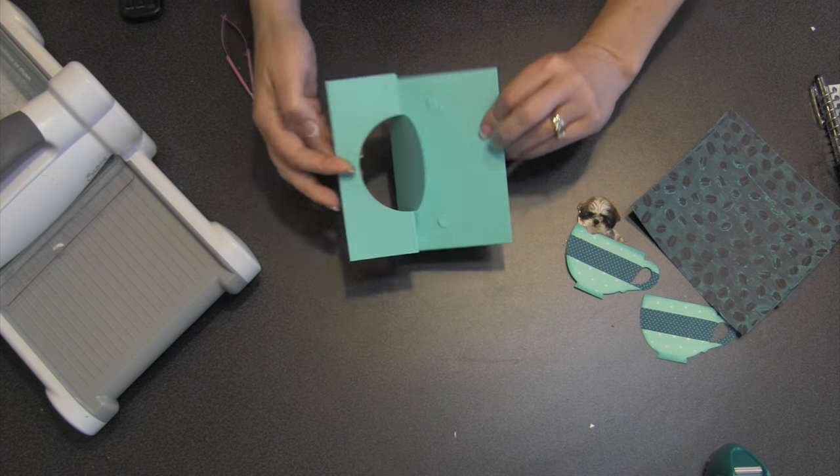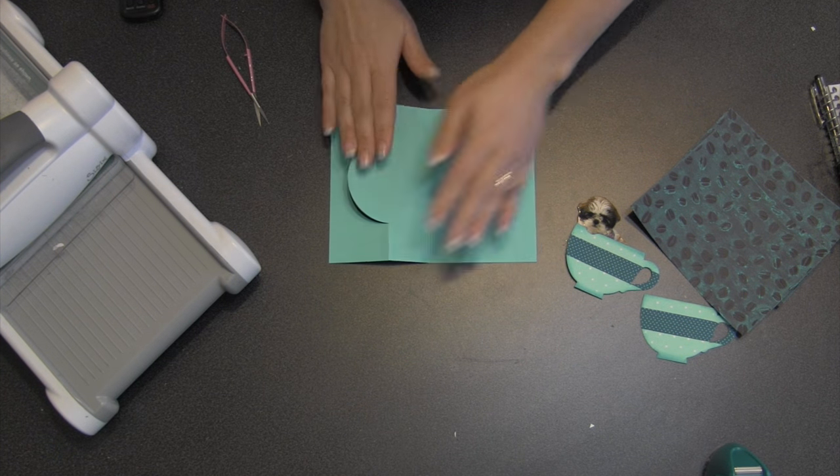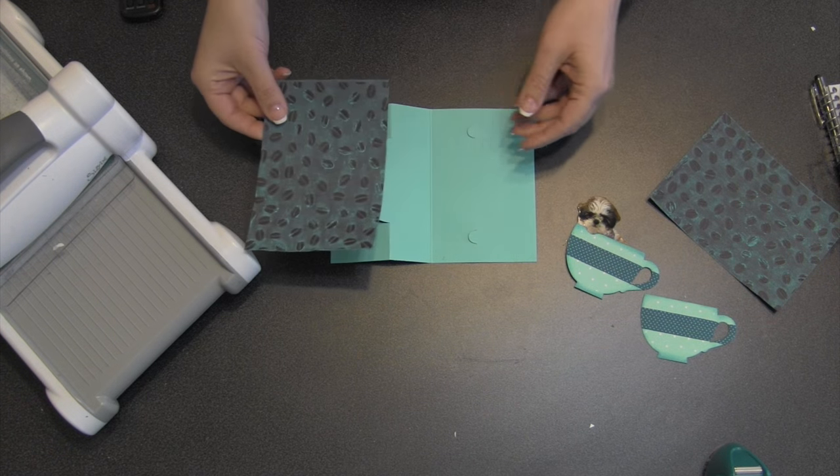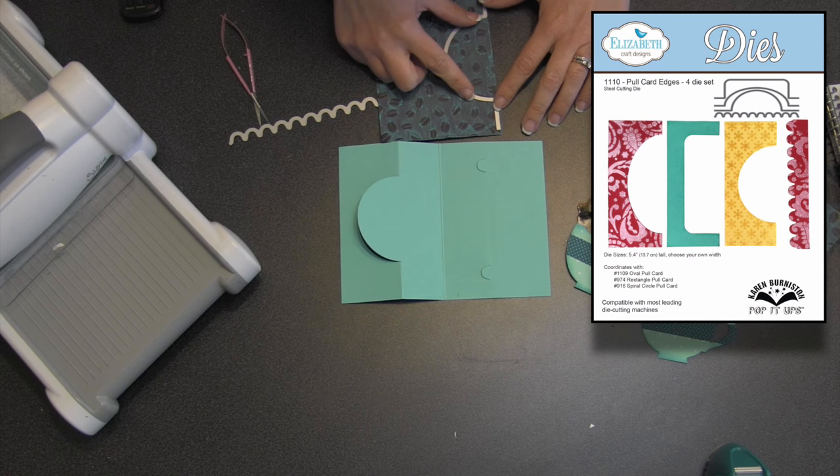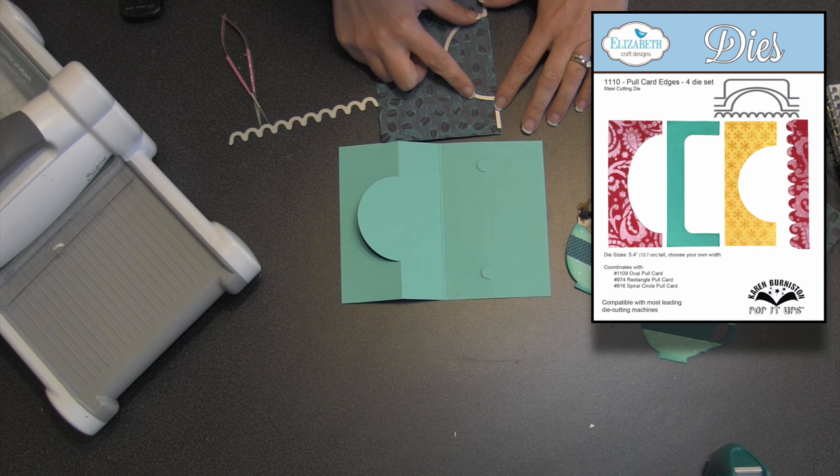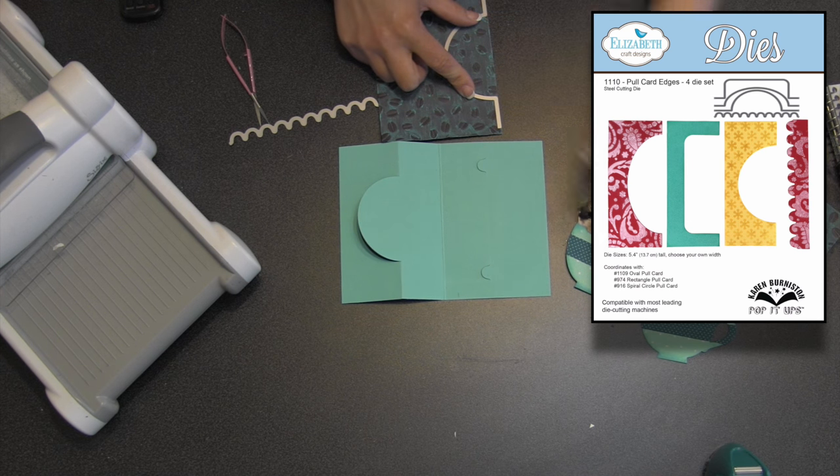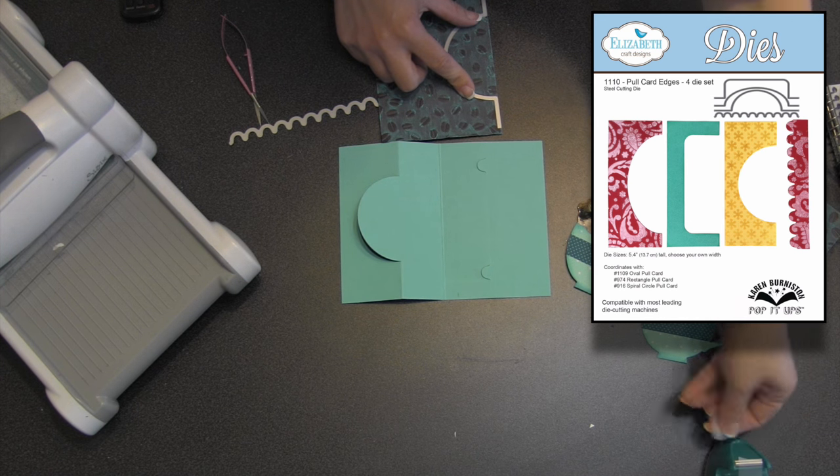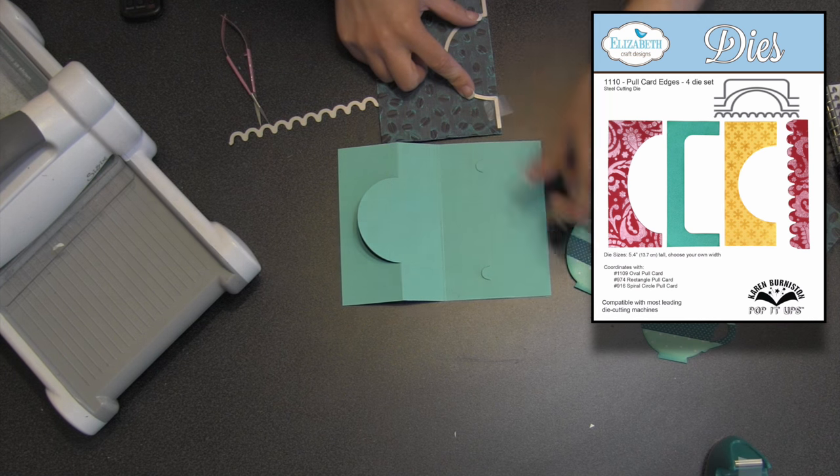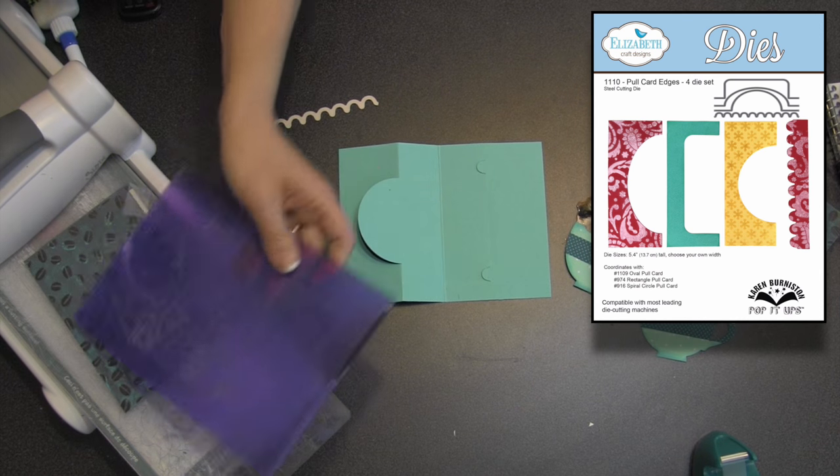One of my newest die sets is called the pull card edges, and these edges are designed to fit all three of the pull cards in the Pop It Ups collection. So I'm going to use these edges on my card today and I'll use them with the coffee bean paint texture that I made earlier.